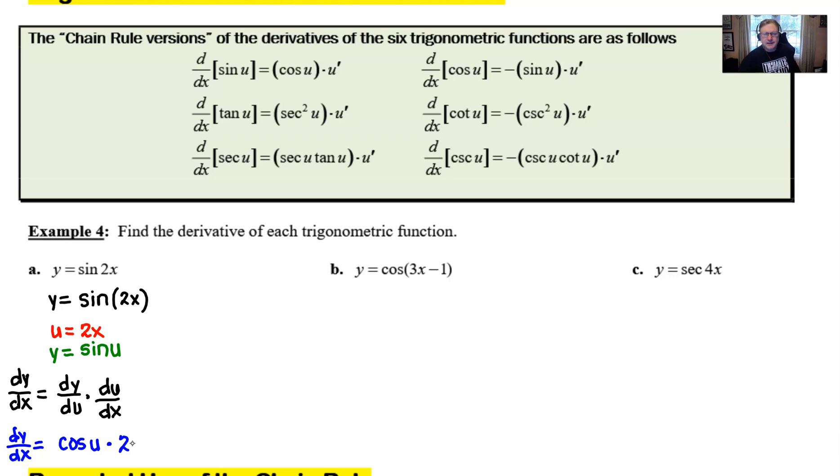Now we don't really want to leave our answer like that because we want this answer to be in terms of only x, not x and u. So we just simply replace the u with 2x. That's sometimes called a back substitution. And it's quite often the case that that 2 is going to be placed in front. And I'm going to choose to put parentheses around the 2x to kind of make it stand out just a little bit. And boom, there it is. There is your derivative of your trig function.